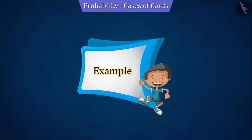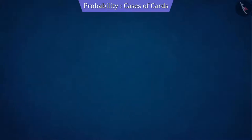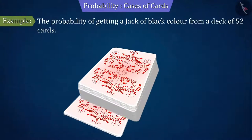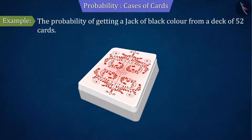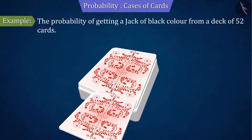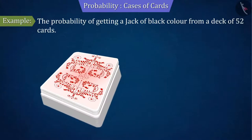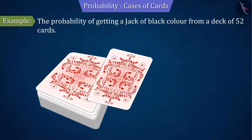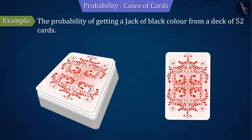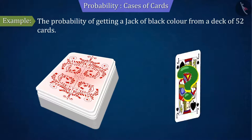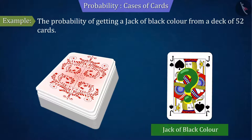Let's see an example. If one card is drawn from a deck of well-shuffled 52 cards, what is the probability that the card drawn is a jack of black colour?